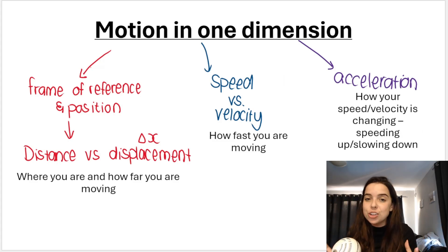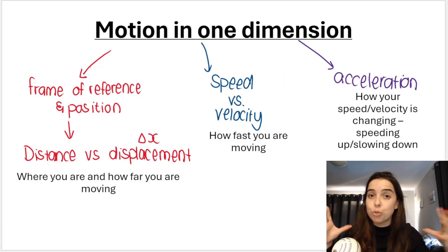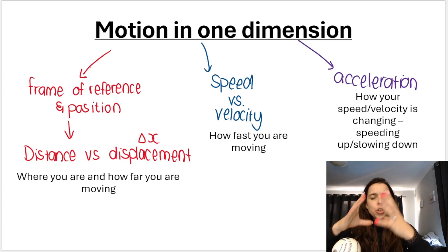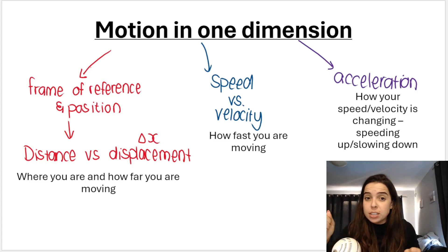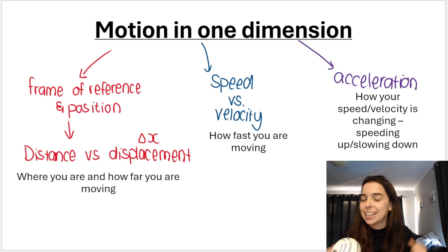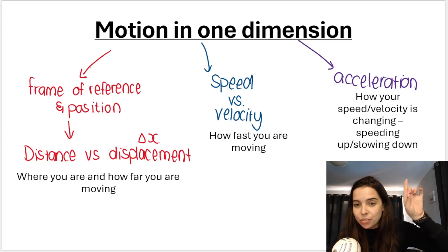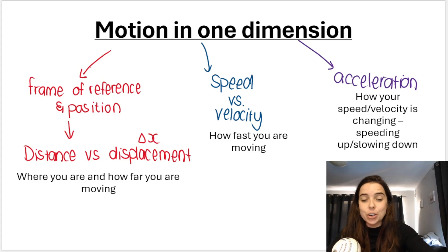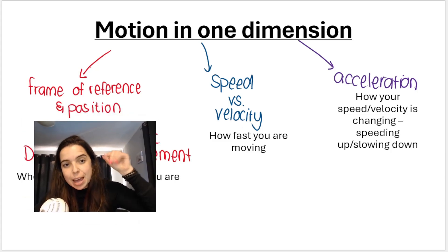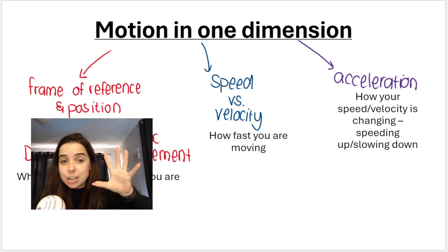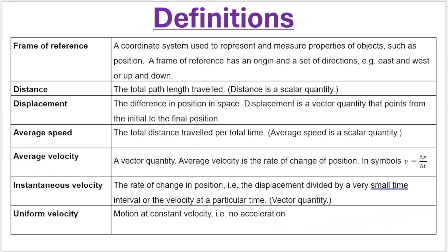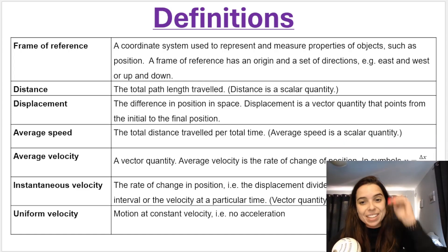In the motion in one dimension section we'll be speaking about frames of reference and position. This leads into distance and displacement — where you are, how far you are moving. Then speed or velocity — how fast you are moving — and acceleration, how your speed or velocity is changing, whether you're speeding up or slowing down. I cover all of these in this playlist, but in this video we focus on frame of reference and position, as these are essential if you want to understand the rest.